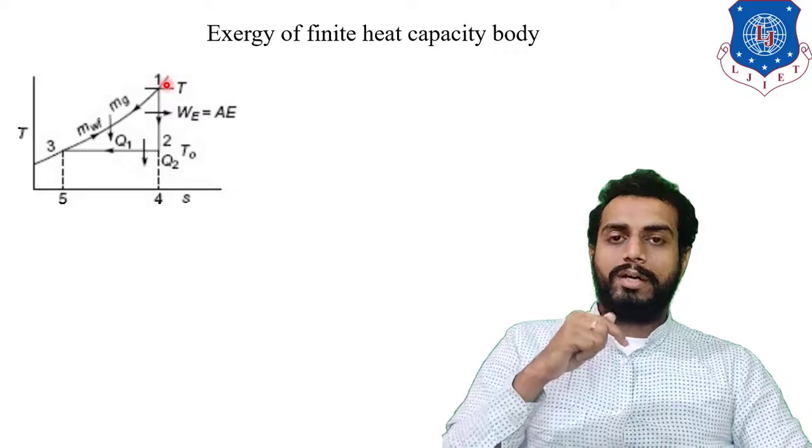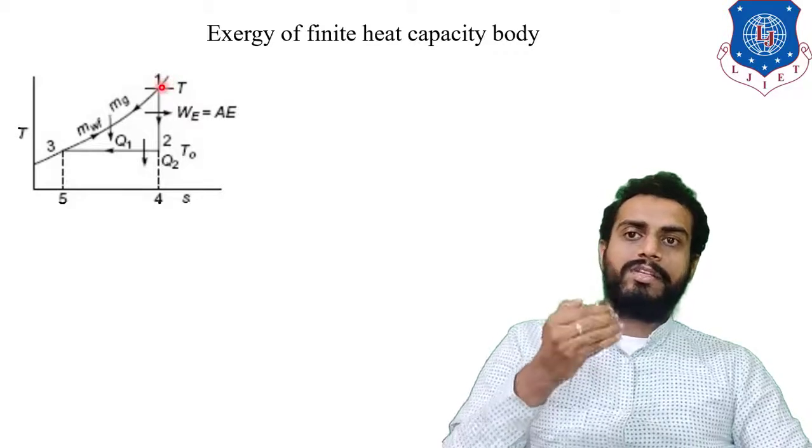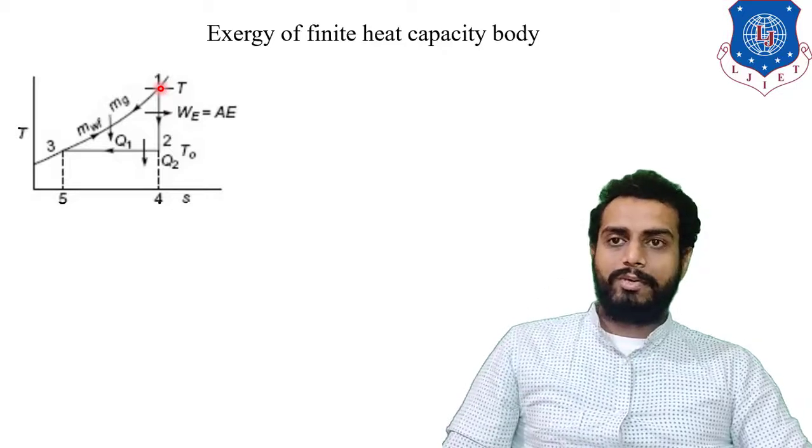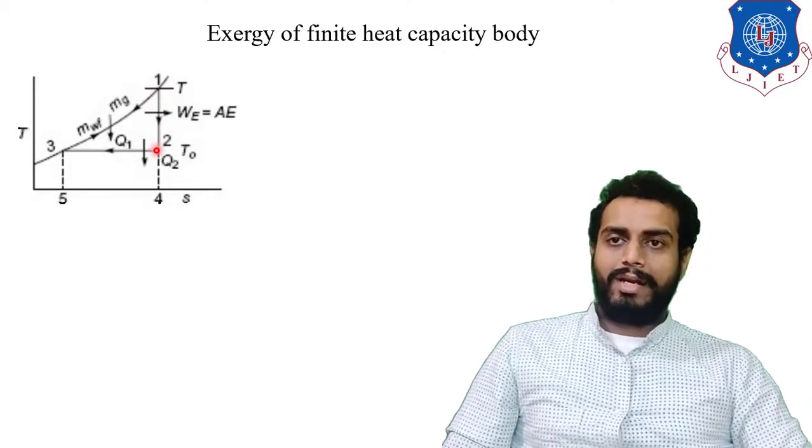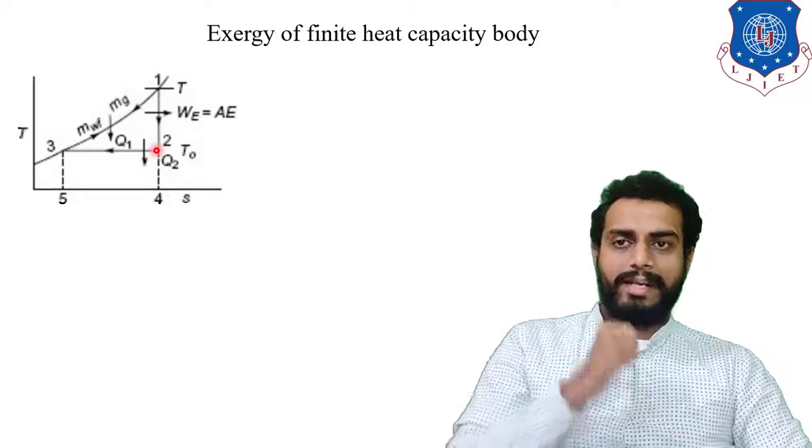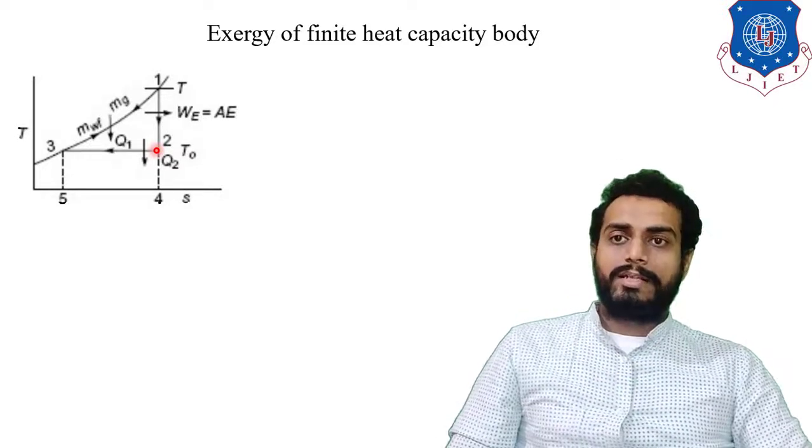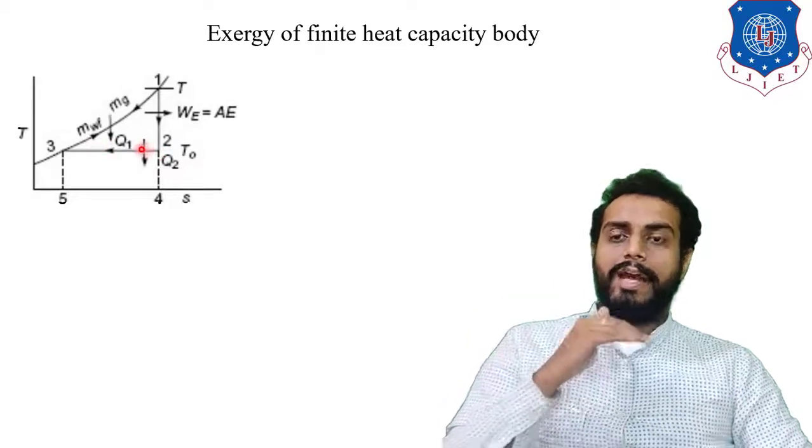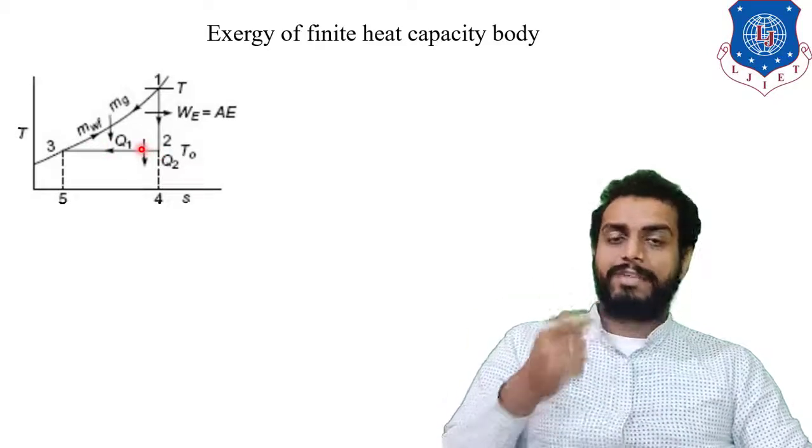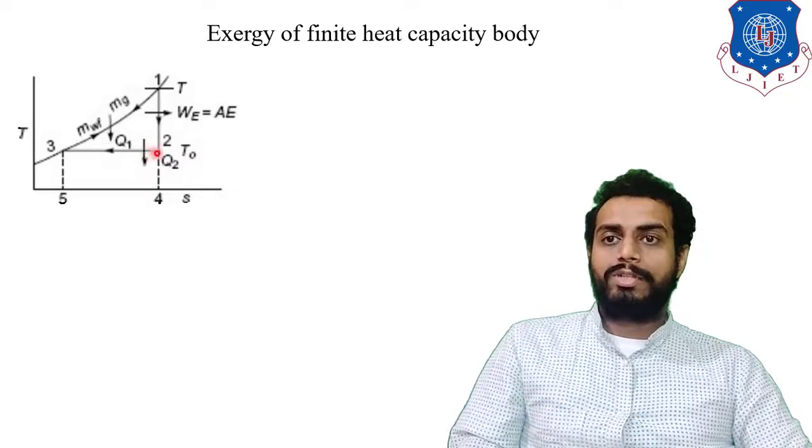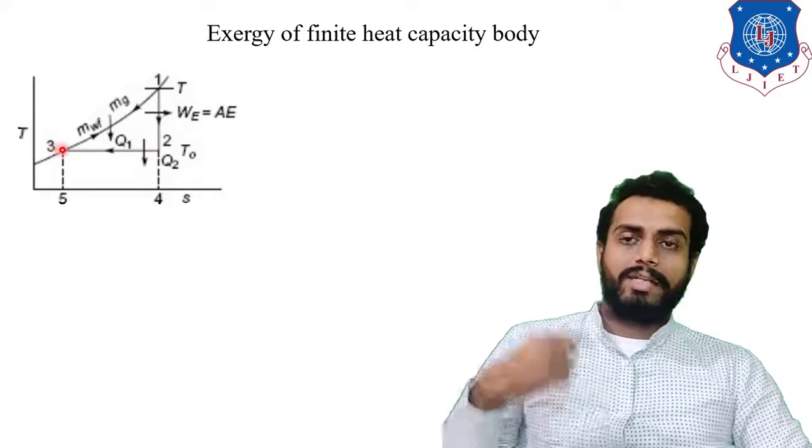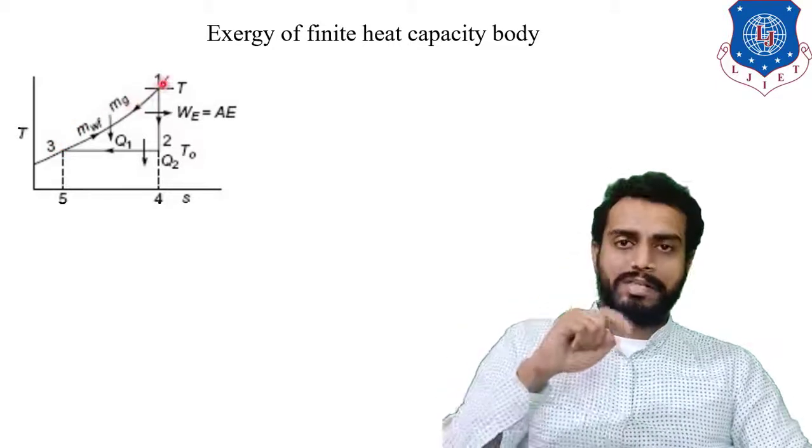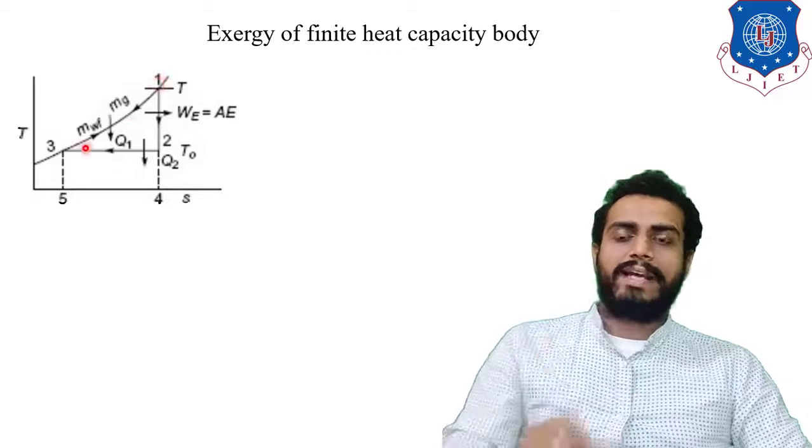Further this working fluid is supplied to the turbine and it is producing some work reversibly and adiabatically. So this is highlighted over here from 1 to 2, so it is getting or giving us some work that is available energy. Now further this fluid is passing through a heat exchanger and it is rejecting the heat at constant temperature. That is isothermal heat rejection that is highlighted by 2 to 3 process and once again this working fluid is passed through the 3 to 1 process. So this is how this whole cycle will act.